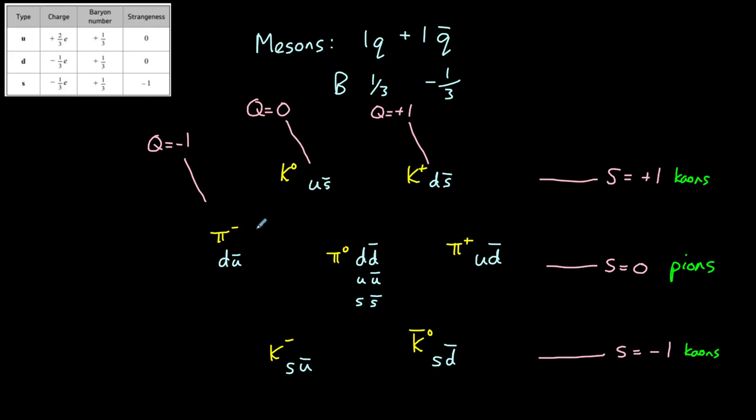This diagram is a convenient way of representing the possible pions and kaons that are formed using up, down, or strange quarks and anti-quarks. You can see that in these lines they have the same charge: these are negative, these are neutral, these are positive. And in these horizontal lines they have the same strangeness: plus one, zero for the pions, and negative one.